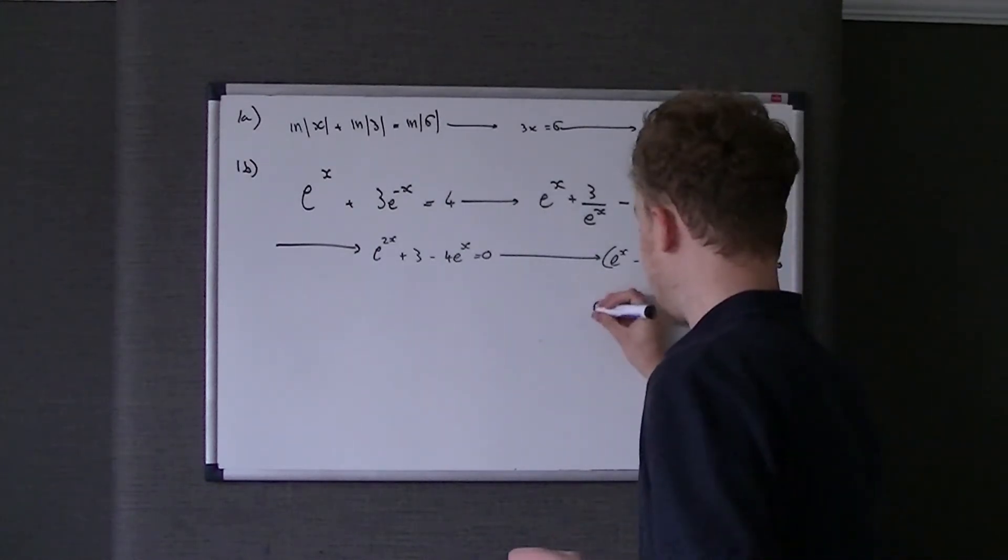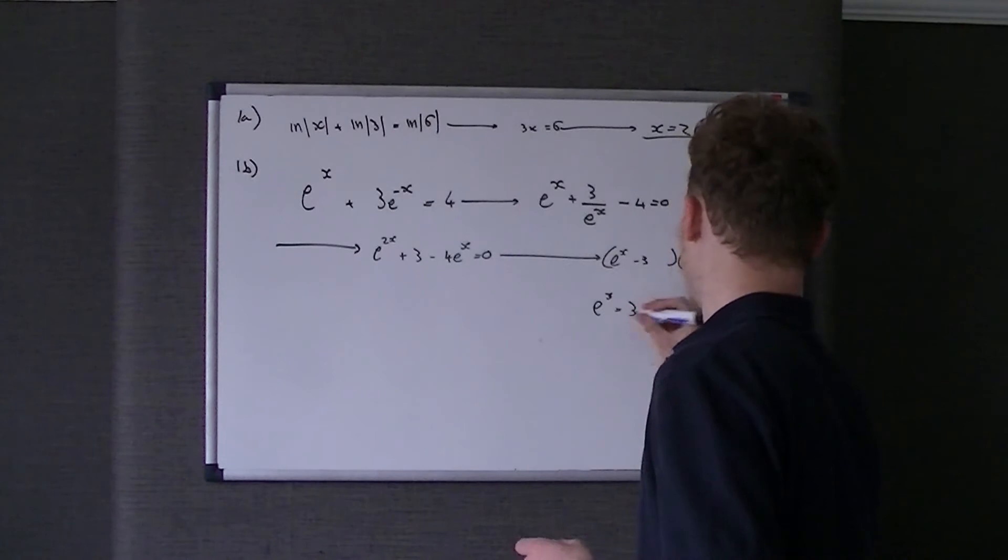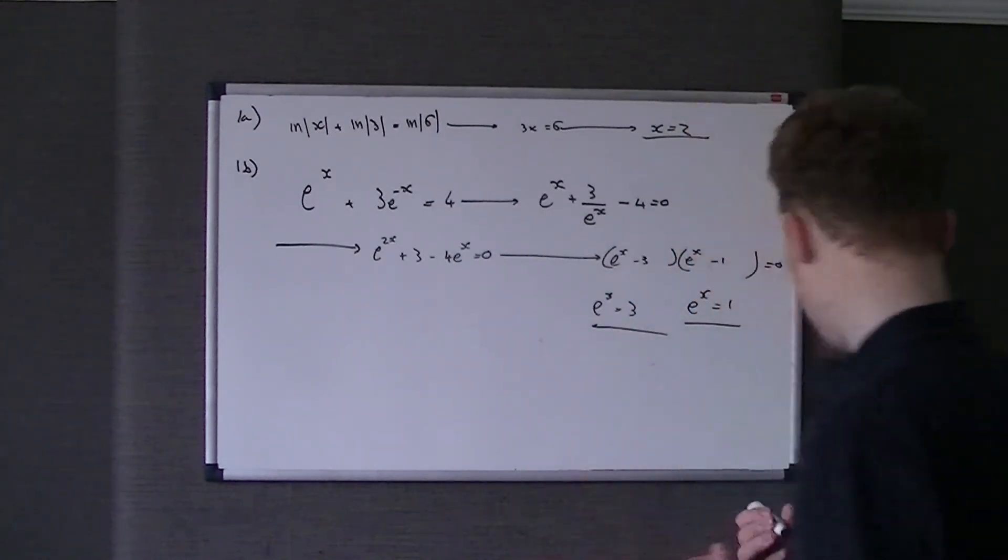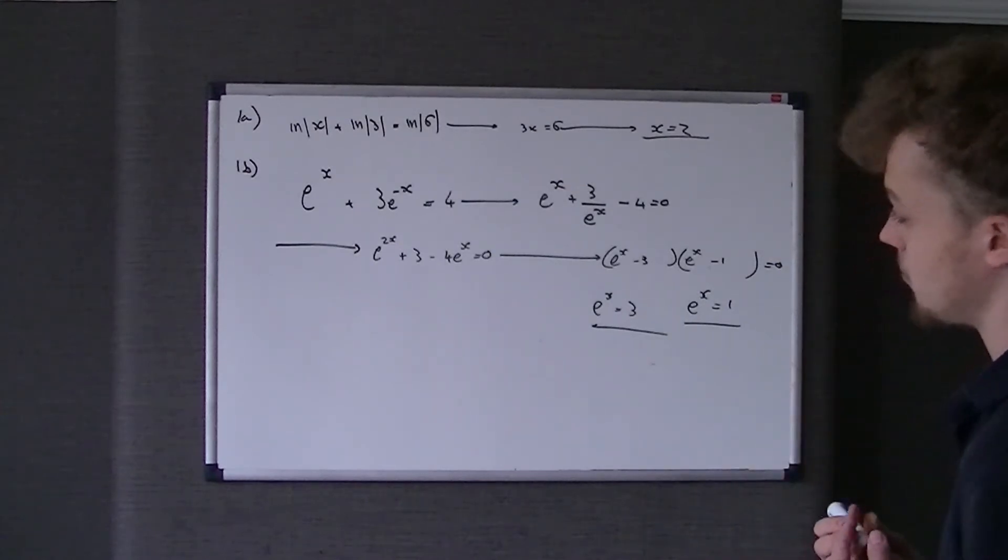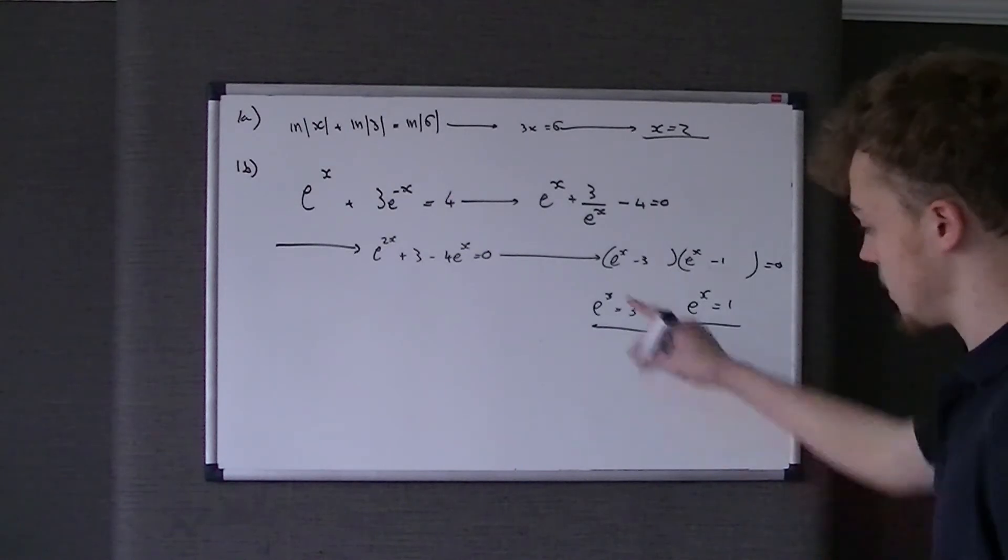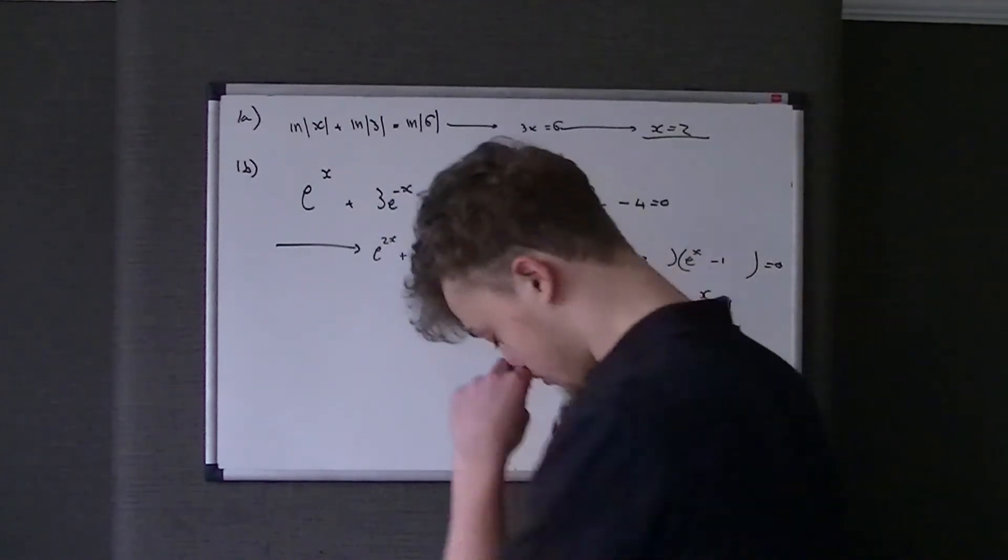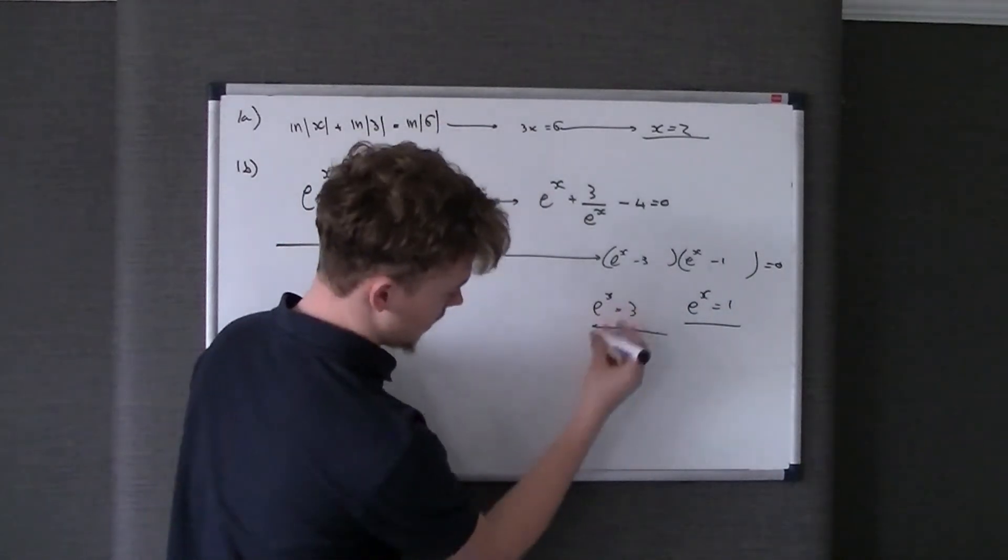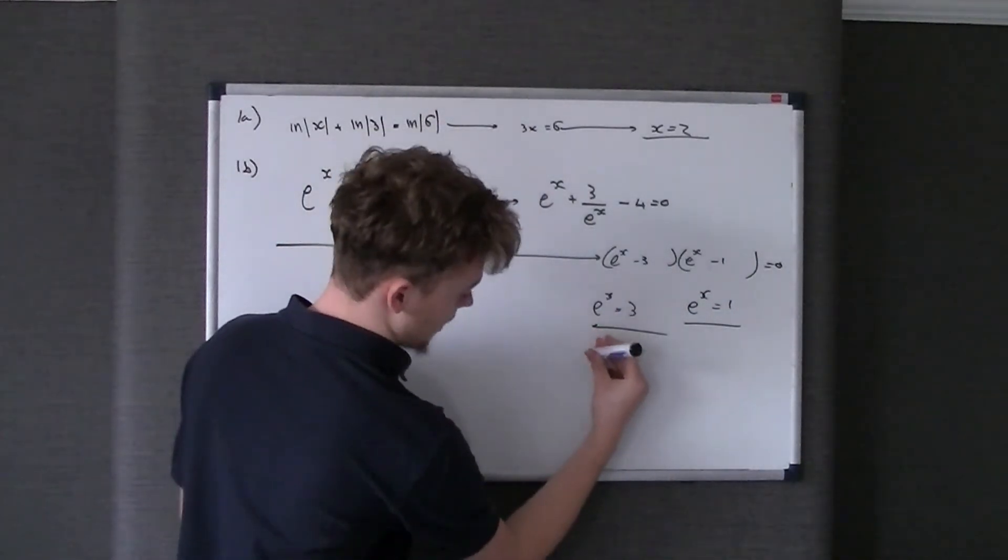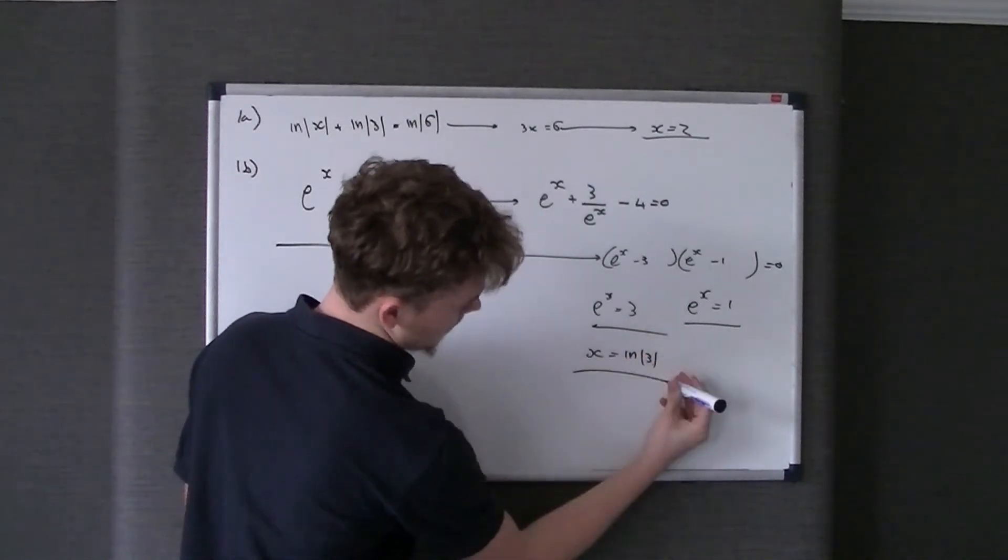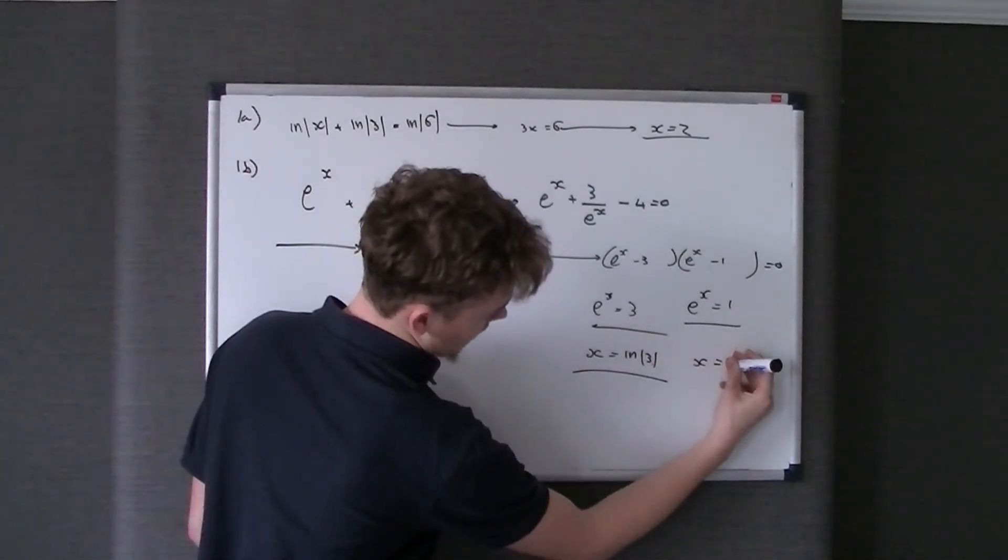So therefore, e to the x is equal to 3, but e to the x is also equal to 1. But it doesn't ask for what does e to the x equal. What it asks for is what x equals. So what we've got to do is get x on its own here. So the only thing that we can do with this, we need something to cancel out the exponential, and we ln both sides, so we get x is equal to the ln of 3, and x is equal to the ln of 1.